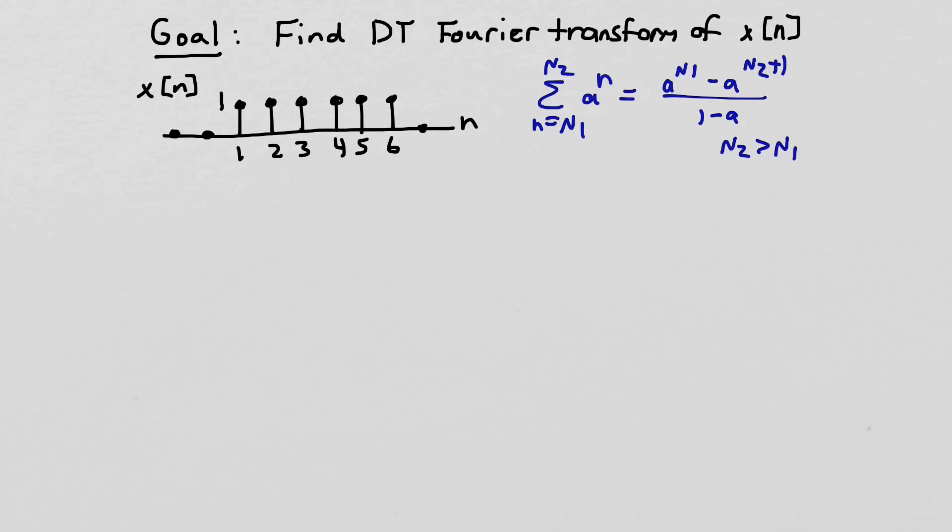So this is the problem that we're going to try and solve. We're going to try and find the discrete time Fourier transform of this signal x(n), which is a square pulse that starts at 1 and ends at 6, and it's equal to 1 over that range. I've written over here the finite sum of a geometric series, which we'll find useful in computing the transform.